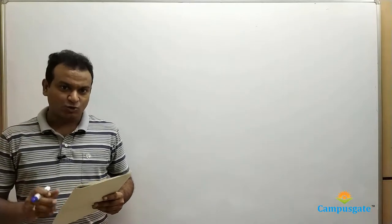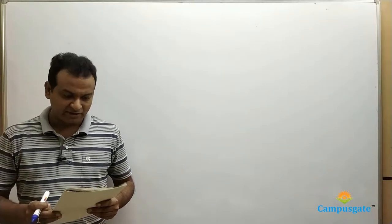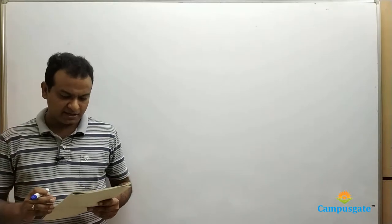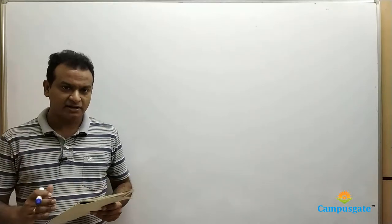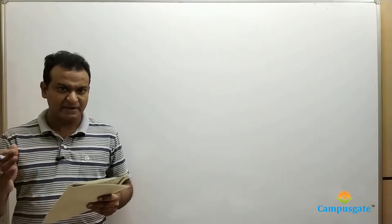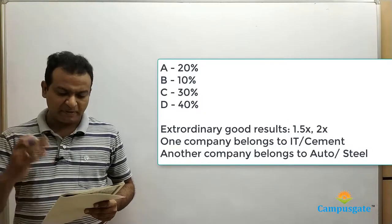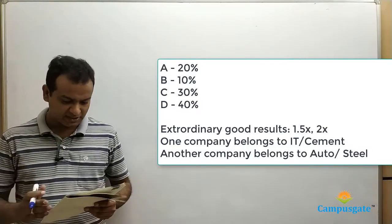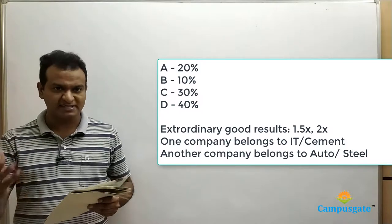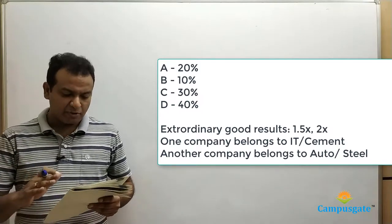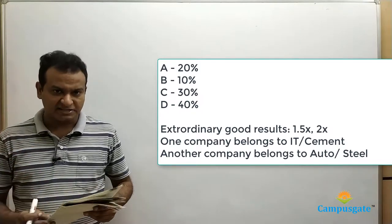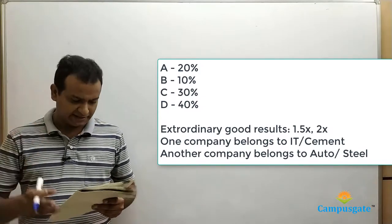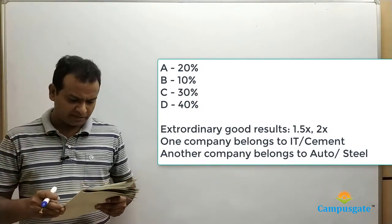This is the CAT 2005 Venkat stock broker question. In this question, he invested in four different companies A, B, C, and D, and he is expecting returns of 20%, 10%, 30%, and 40% from these companies. These companies belong to different industries — cement, information technology, auto, and steel — not necessarily in the same order.